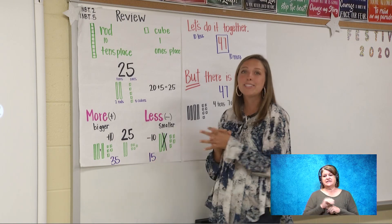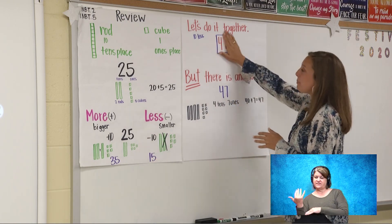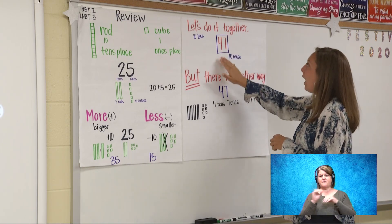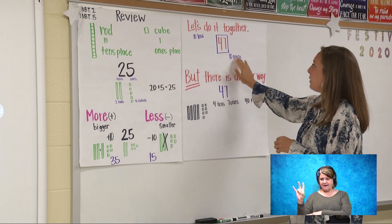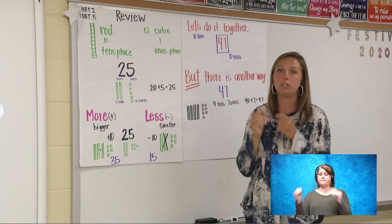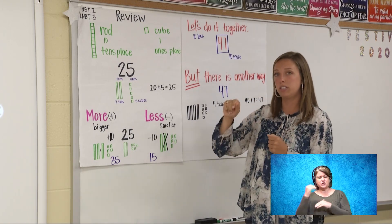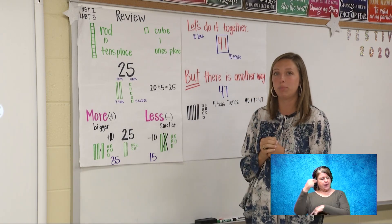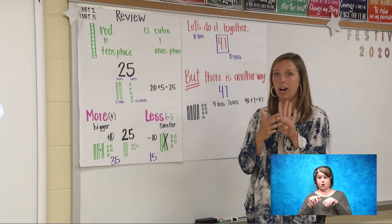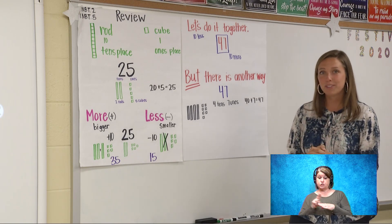I want us to all do it together. I picked the number 47. I want us to go 10 more and 10 less. You can do it mentally, you can draw it out using your base 10 blocks, or you can use your fingers for rods. I'll give you a few seconds.